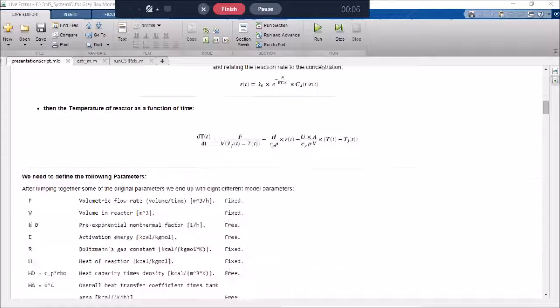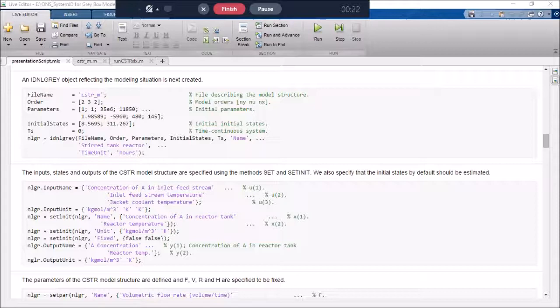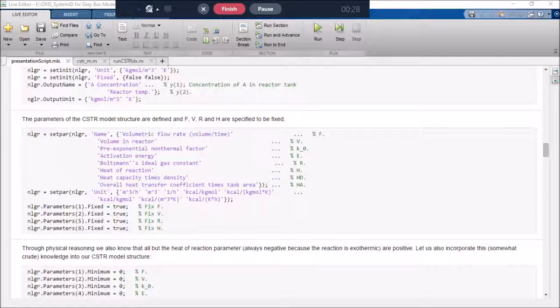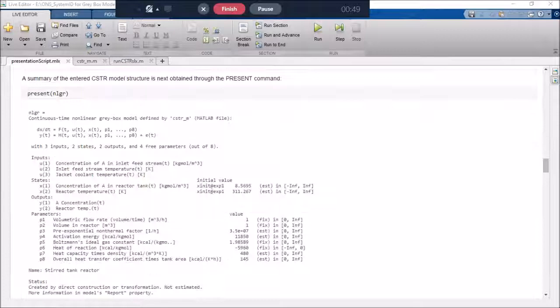This is our CSTR model open in MATLAB. Firstly, we have to create our grey box object. Then we specify the input states and outputs of our CSTR model using set and setinit. We also specify that the initial states should be estimated by default. Then we define our parameters and we specify which ones we are not going to change or estimate. It is important to set rough boundaries or realistic boundaries for your parameters. In this example, we know that all but the heat of reaction parameter is positive.